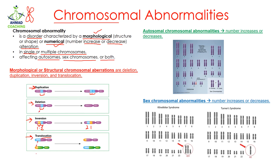The fourth chromosomal abnormality is translocation. 'Location' means place, and 'trans' means that place is changed. For example, we have two chromosomes and a part of one chromosome is exchanged with the other — this part goes here and the other part comes here. This causes a change in the information stored in the chromosome, which is why it is called translocation.